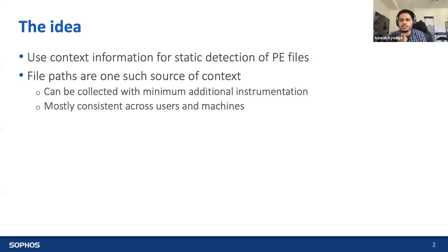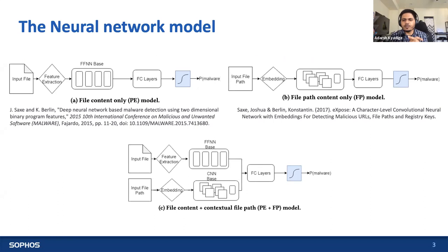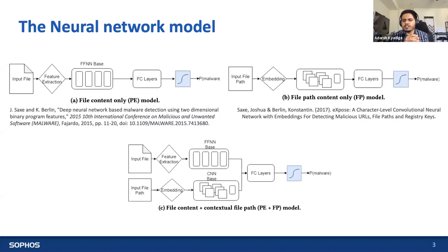The model we constructed is based on prior work from two separate approaches by Sachs and Berlin. The first is a file-content-only model from 'Deep Neural Network Based Malware Detection Using Two Dimensional Binary Program Features,' which consumes features from PE file content and predicts whether the file is malware. They also built a string model from 'EXPOSE: A Character-Level Convolutional Neural Network with Embeddings for Detecting Malicious URLs, File Paths, and Registry Keys.' Based on these two models, we construct a combined model that consumes both the file content and associated file paths, and compare performance against the original two baseline models.